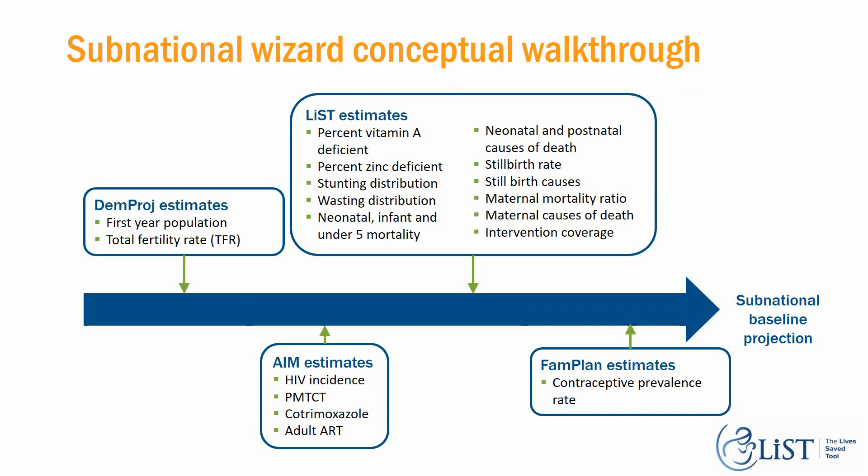As you can see here, there are many inputs in each module that the user can enter. In DEM-proj, we have total population for the first year and total fertility rate. In AIM, we have HIV prevalence, PMTCT, COTRAM, and adult ART. In the LiST tool, most users have intervention coverage available. For family planning, we have the contraception prevalence rate. Once you're done with the wizard, you'll have a subnational baseline projection created.